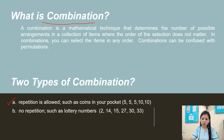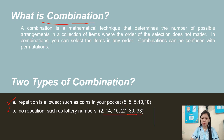For example, coins with values 5, 5, 5, 10, 10 — repetition is allowed. And letter B is no repetition, such as lottery numbers. For example: 2, 14, 15, 27, 30, and 33 — so there is no repetition of items in the list.